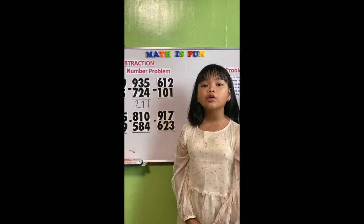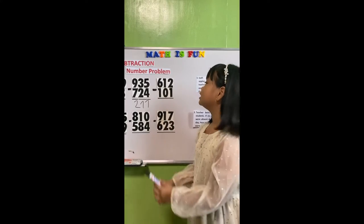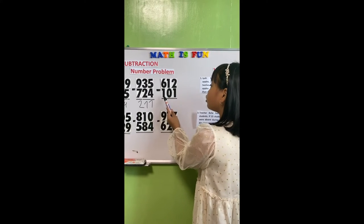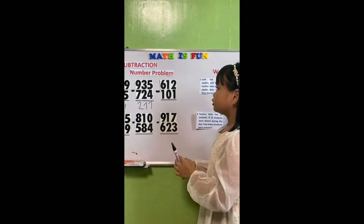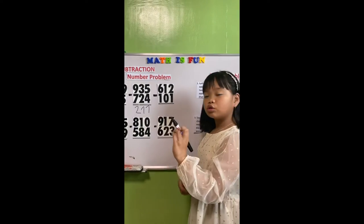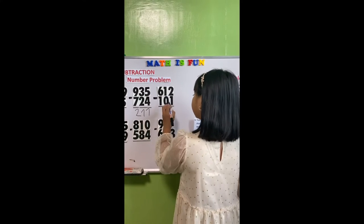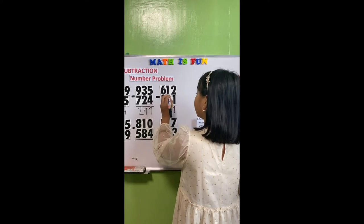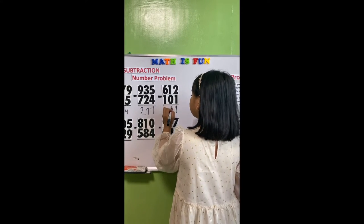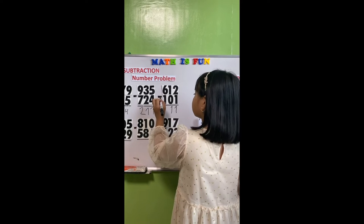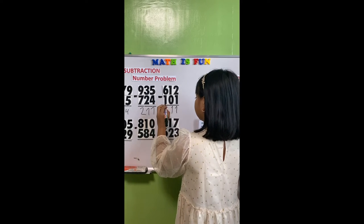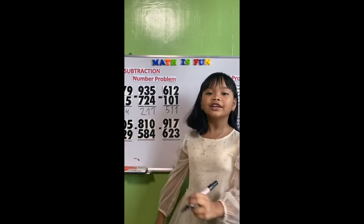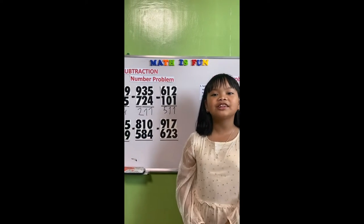Our third equation is 612 minus 101. 2 minus 1 equals 1. 1 minus 0 equals 1. 6 minus 1 equals 5. Our answer is 511.